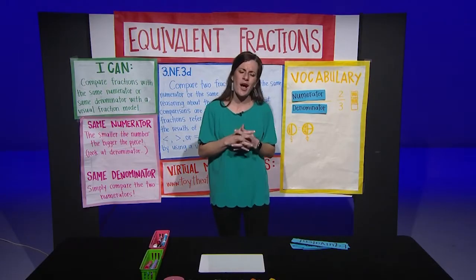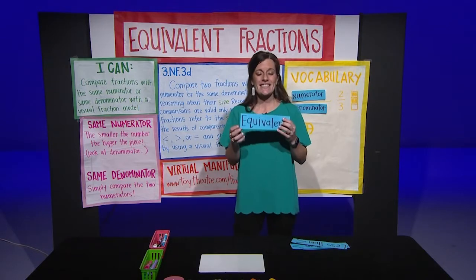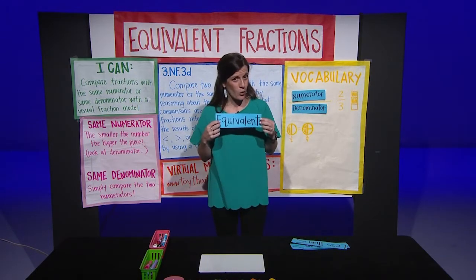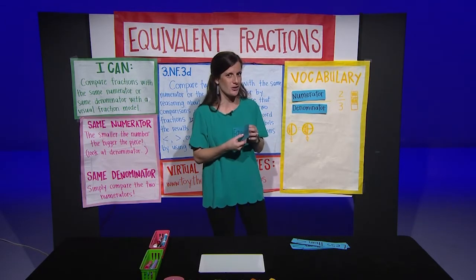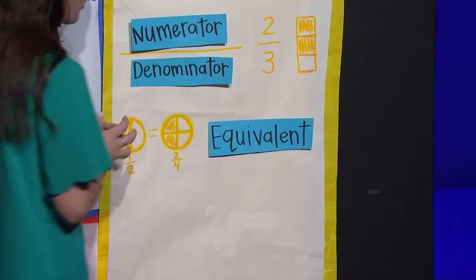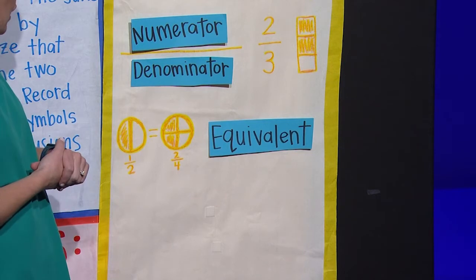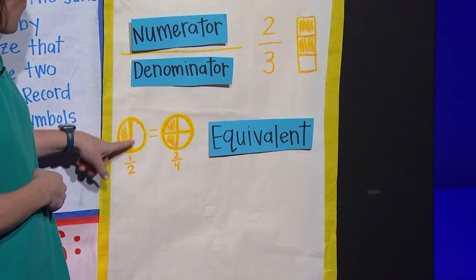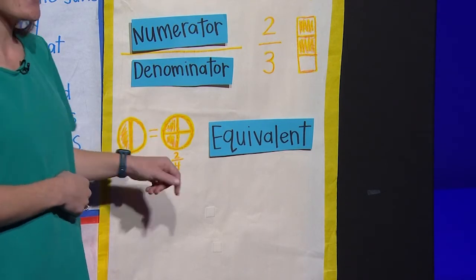The third word is a little more complex, and it might be new to some of you. That word is equivalent. Equivalent is just a fancy word for equal. So we're going to put this on our word wall and come back to it in just a little bit. When equivalent fractions are shown, that means that they take up the same amount of space in a model. For example, one-half takes up the same amount of space as two-fourths, so they are equal.